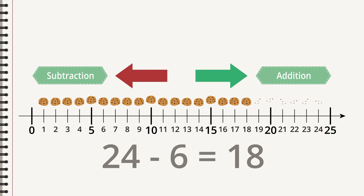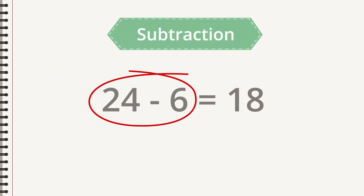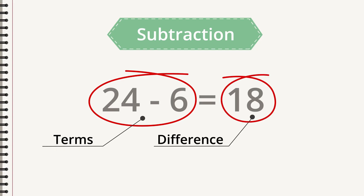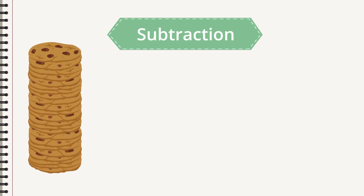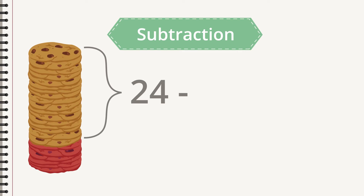They are opposites. The numbers you calculate with when subtracting are called terms, just like in addition. The result is the difference. Difference is the size of the gap between two numbers. A pile consists of twenty-four cookies; we mark six of them. The difference between twenty-four and six is eighteen.